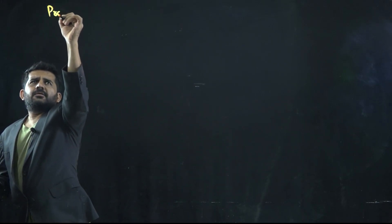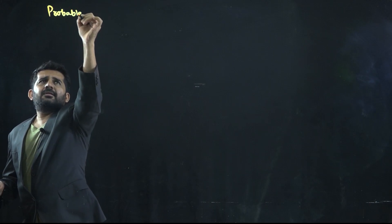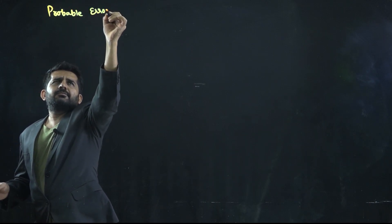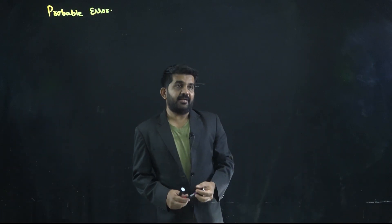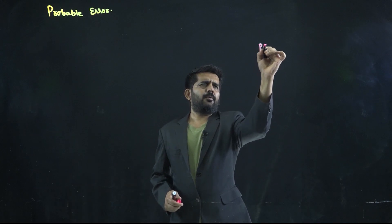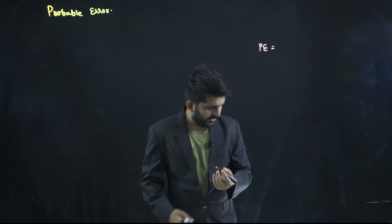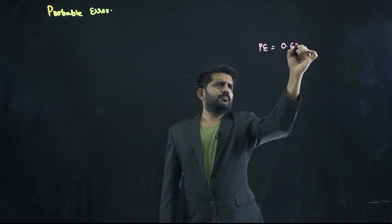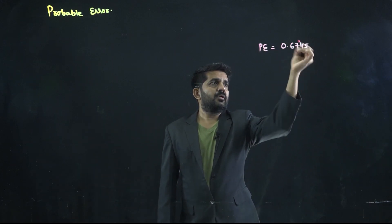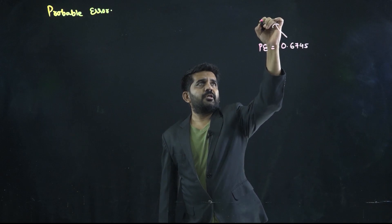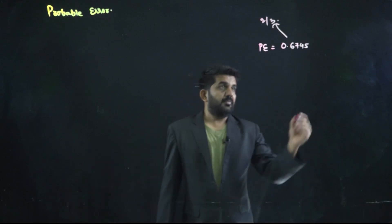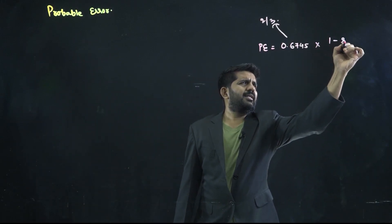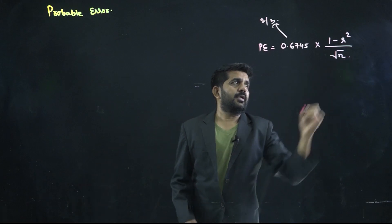Hello friends, today we are going to learn something regarding probable error. First, let me give you the formula of probable error and how to find it. Probable error can be found out by 0.6745 — sometimes it is also taken as two-thirds, but normally you should take 0.6745 — multiplied by 1 minus r square upon under root n.